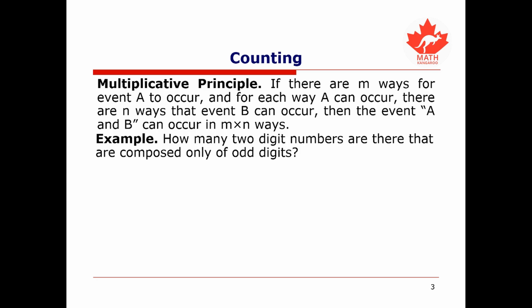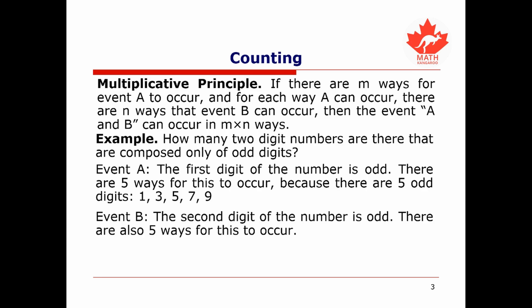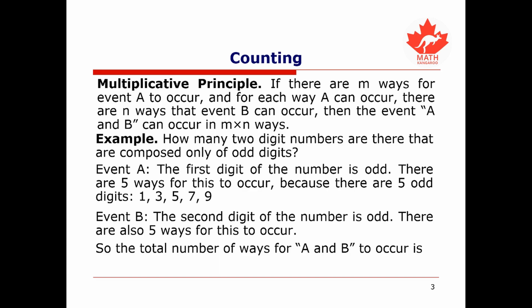If I ask how many two-digit numbers are there that are composed only of odd digits — we can call event A the event where the first digit is odd. There are five different ways for this to occur, because there are five possible odd digits: 1, 3, 5, 7, and 9. Similarly, event B is the event where the second digit is odd, with also five ways to occur. So the multiplicative principle tells us there are 5 times 5 equals 25 different ways.